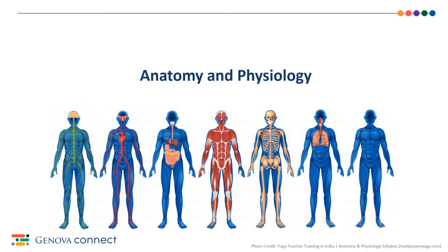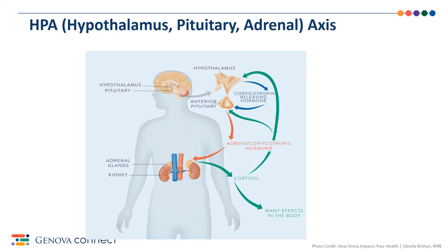The basics of anatomy, which is structure and organs, and physiology, the function of these organs, as it relates to the adrenal cortex stress profile. The HPA axis is how we secrete hormones from our adrenals, like cortisol. It is composed of three main structures.